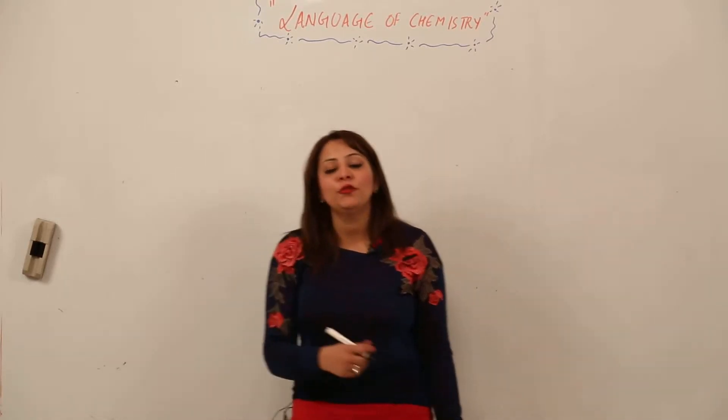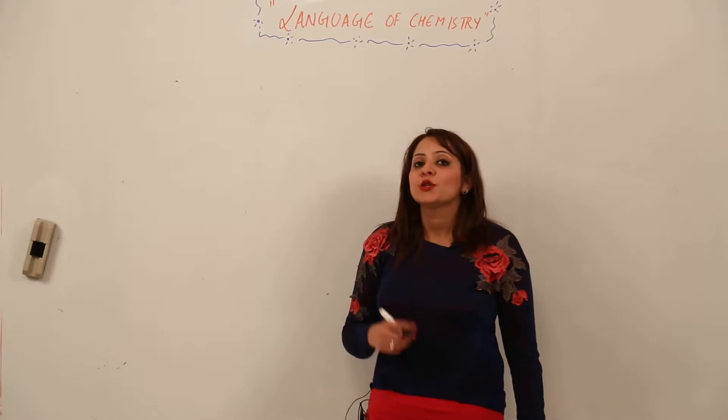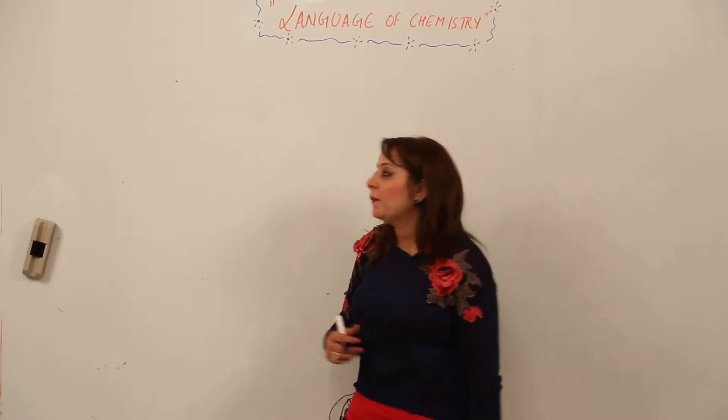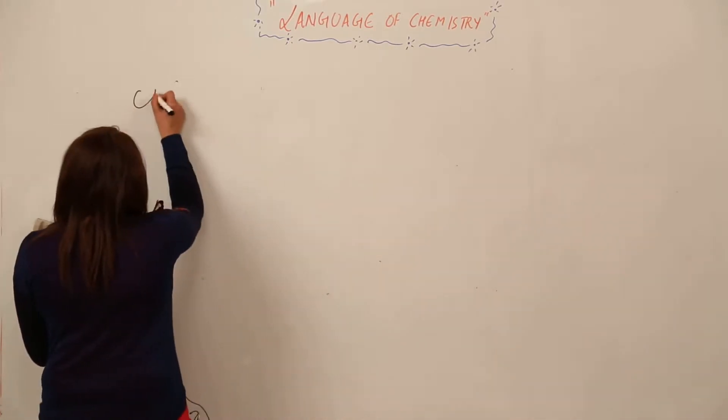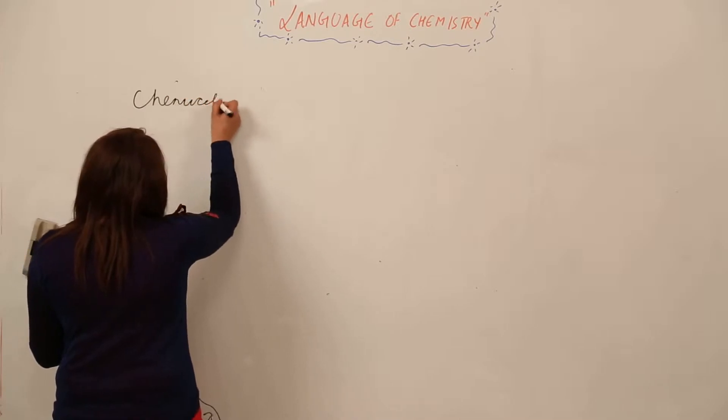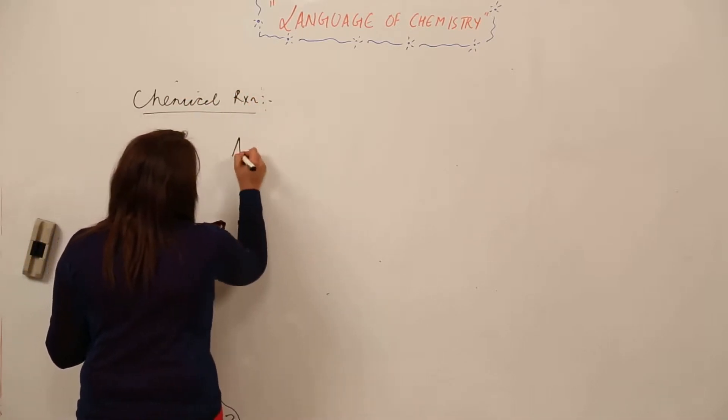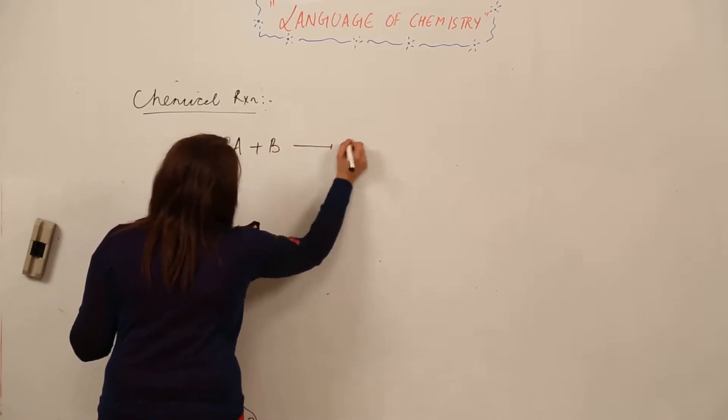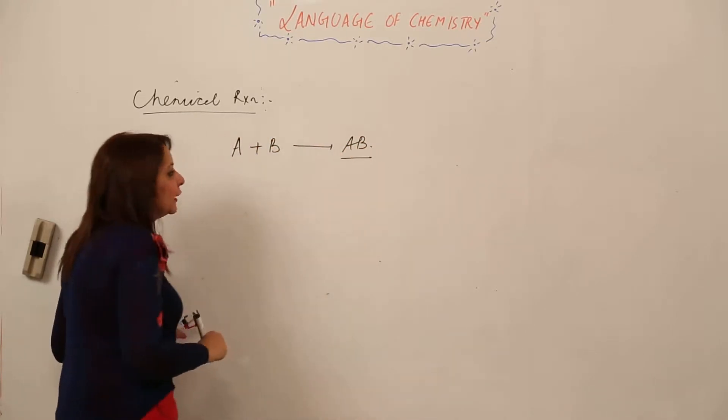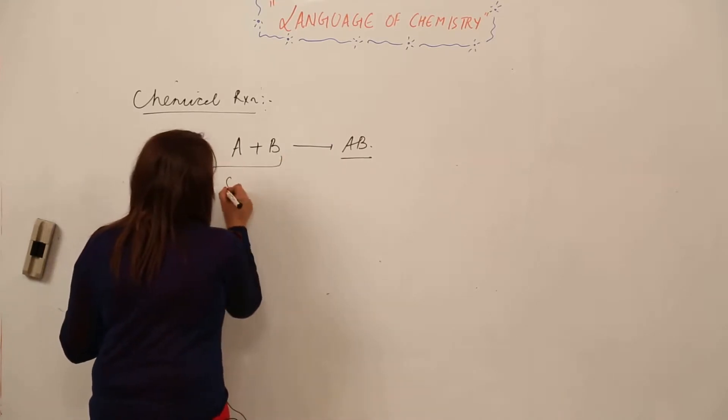Now we'll be using chemical formulas in chemical reactions, so first I want to make you familiar with chemical reactions. A chemical reaction is a process in which two or more substances are mixed or unite to form a new substance.